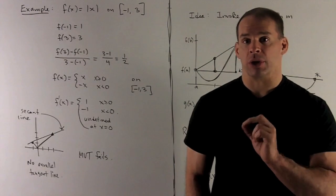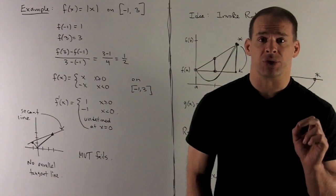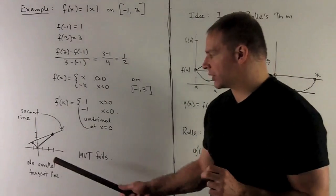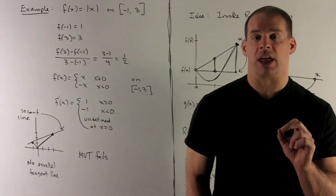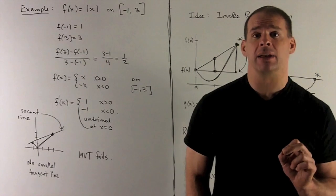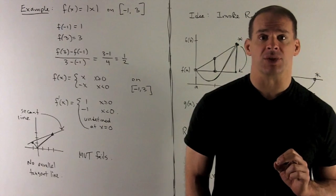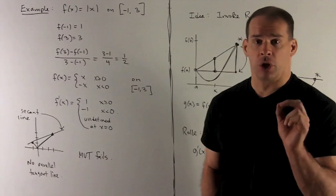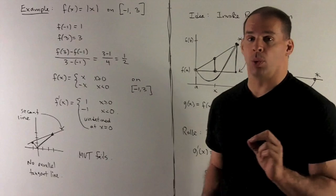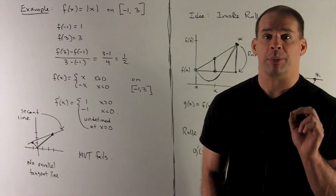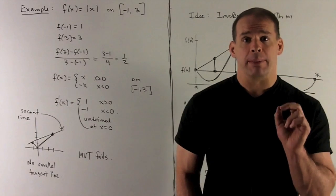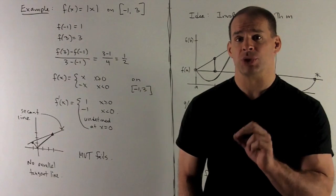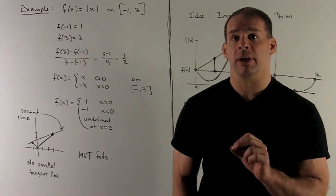On one side the derivative equals 1, on the other side it equals -1, and at x = 0 the derivative is undefined — that makes sense because there's a corner there, so we can't place a single tangent line. The possibilities for tangent slopes are only 1 or -1, but the slope of the secant line is 1/2. So we'll never find a tangent line whose slope equals 1/2, and the Mean Value Theorem fails in this case.